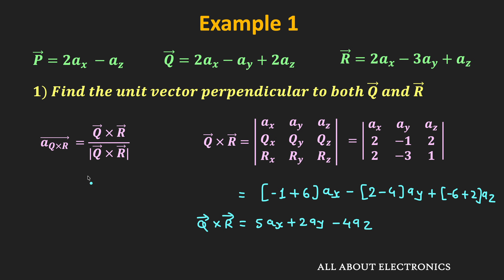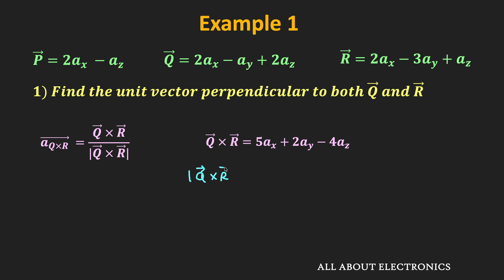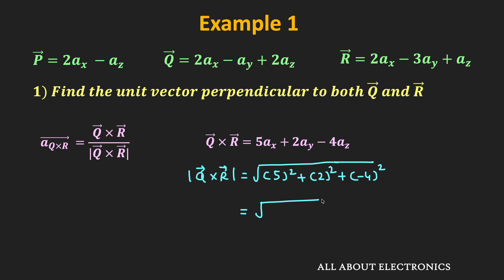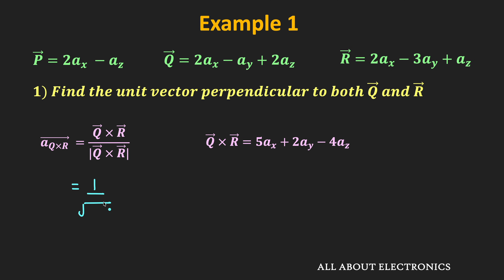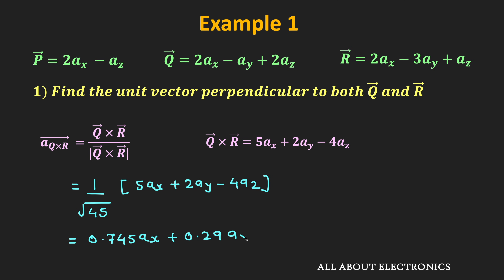Now let us find the magnitude of Q×R. The magnitude is the square root of 5² + 2² + (-4)², which equals √(25 + 4 + 16) = √45. So the unit vector perpendicular to both Q and R is (1/√45)(5Ax + 2Ay - 4Az), which equals 0.745Ax + 0.29Ay - 0.59Az.